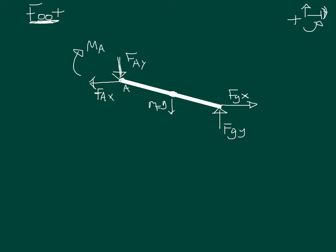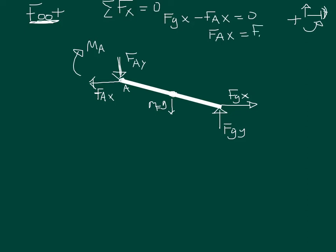Now that we've completed our free body diagram, we can write our governing equations. The first equation sums forces in the x direction, set equal to zero because this is a statics problem with no acceleration. We have a positive ground reaction force in x (F_gx) and a negative ankle joint reaction force. Solving for our unknown F_ax, we get F_ax equals F_gx.